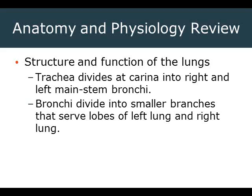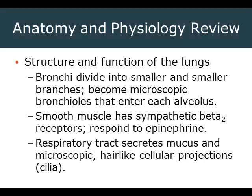The bronchi divide into smaller branches that serve as lobes of the left and right lungs — two on the left and three on the right. They continue to branch out, much like a bunch of grapes, until they get down to the alveolus. Within the bronchioles, bronchi, and to a degree the trachea, there are smooth muscles that respond to beta-2 stimulus — they respond to epinephrine, with beta-2 being the main sympathetic receptor found in the lungs. Beta-1 is the heart; beta-2 is the lungs.